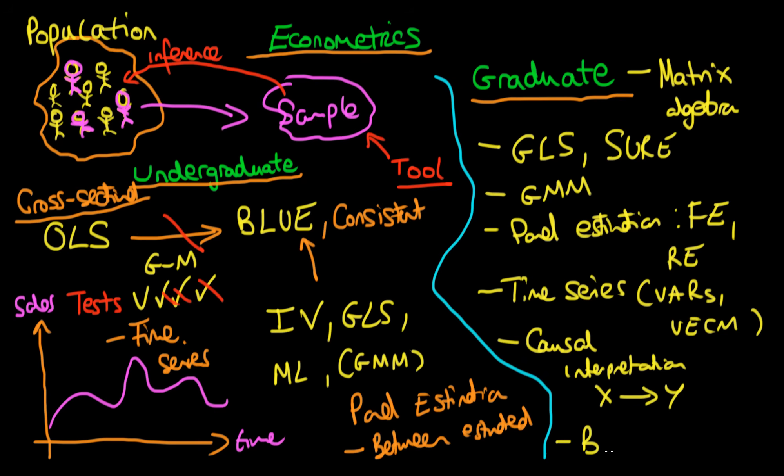We're also going to talk about a little bit Bayesian inference or Bayesian econometrics which is a whole different way of thinking about the world opposed to the frequentist view which we're going to have covered up until this point.